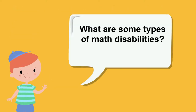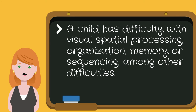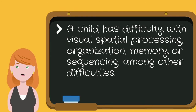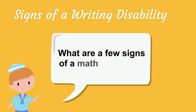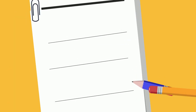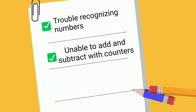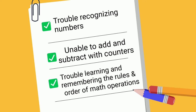What are some types of math disabilities? When it comes to a math disability, usually a child has difficulty with visual-spatial processing, organization, memory, or sequencing, amongst other difficulties. What are a few signs of a math disability? Some signs include trouble recognizing numbers, being unable to add and subtract with counters, and trouble learning and remembering the rules and order of math operations.